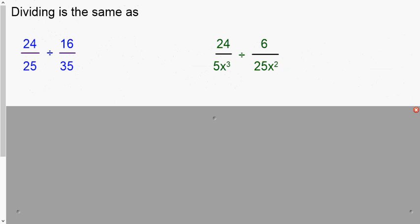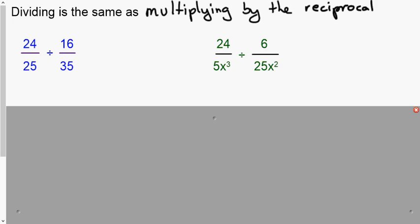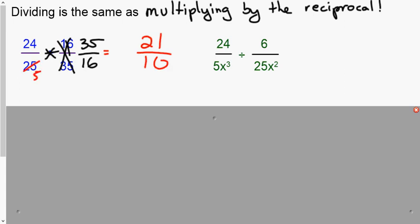The last thing we'll cover is dividing. Dividing is the same as multiplying by the reciprocal — we flip the second fraction. Cross off the division sign and the second fraction, and rewrite it as multiplication by its reciprocal. For example, with 21 over 16 divided by 35 over 12, rewrite as 21 over 16 times 12 over 35. You can reduce: 21 and 35 are divisible by 7, giving 3 over 5; then multiply to get 21 over 10. Same process applies with variable expressions.